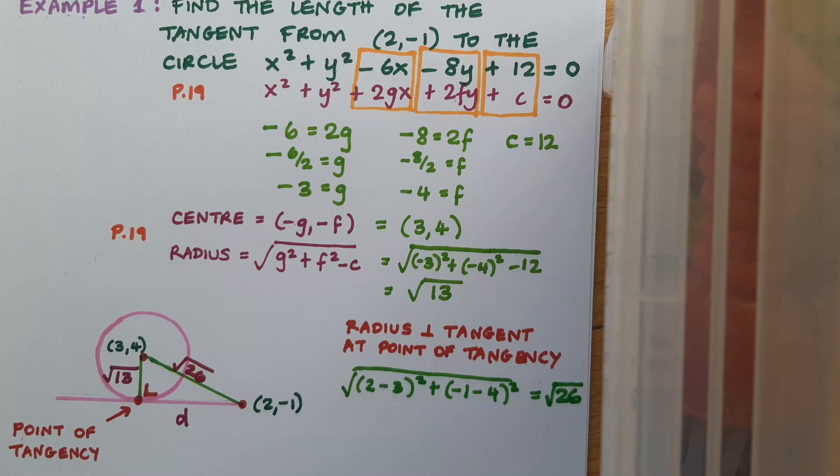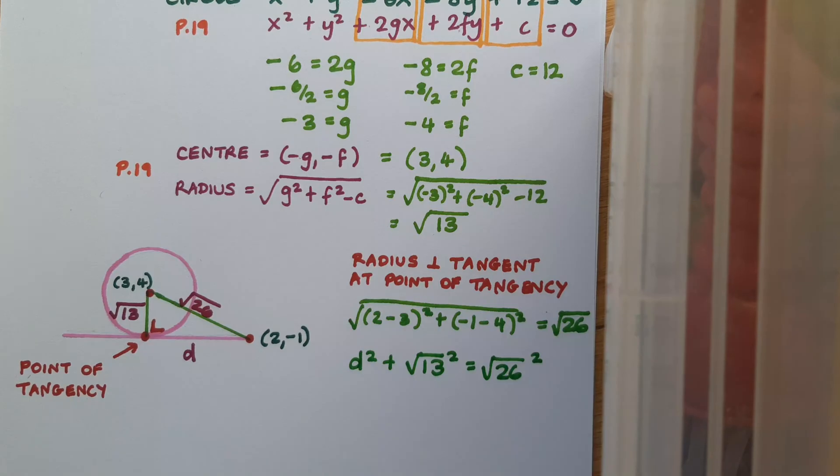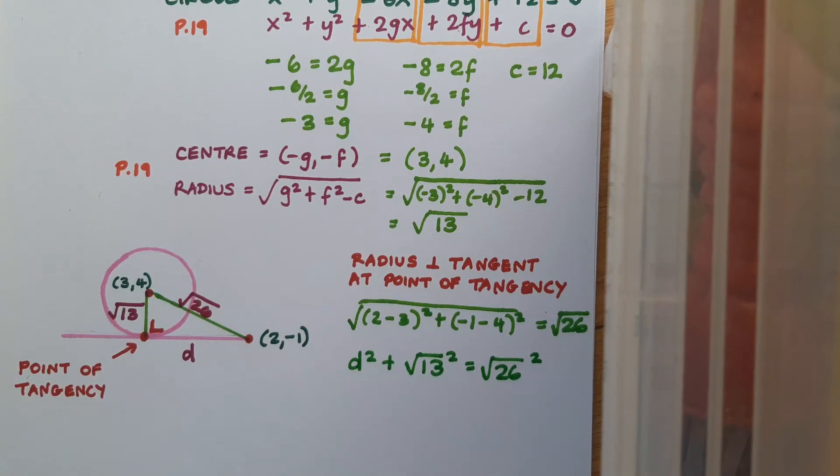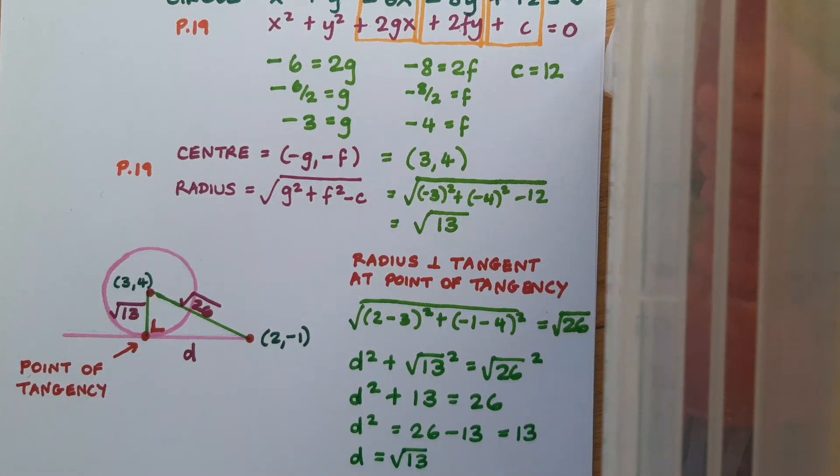And now we're all set up to use Pythagoras to find that missing distance d. So this is how that calculation is going to look: d² + (√13)² = (√26)². I can square those square roots to get d² + 13 = 26. d² = 26 - 13, which is just 13. And finally, square root to get your value for d. So d = √13. And this is the answer that was required, the length of the tangent from the point (2,-1) to the circle.